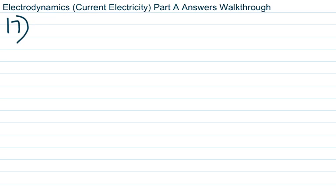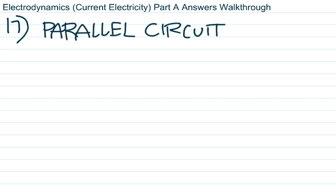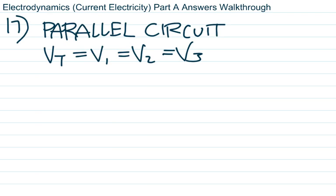Number 17 involves resistors connected in parallel. As you connect more resistors in parallel, what happens to the potential difference across each? In parallel, everything is independent as if by itself. The rule is V total equals V1 equals V2 equals V3, and so on — they all equal the source voltage regardless of how many are added. That's why all outlets in your house are at 120 volts: they're all wired in parallel to the same source voltage.